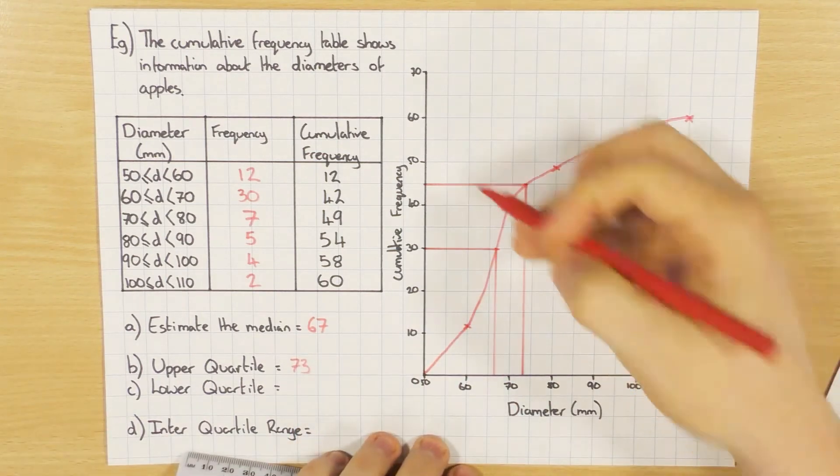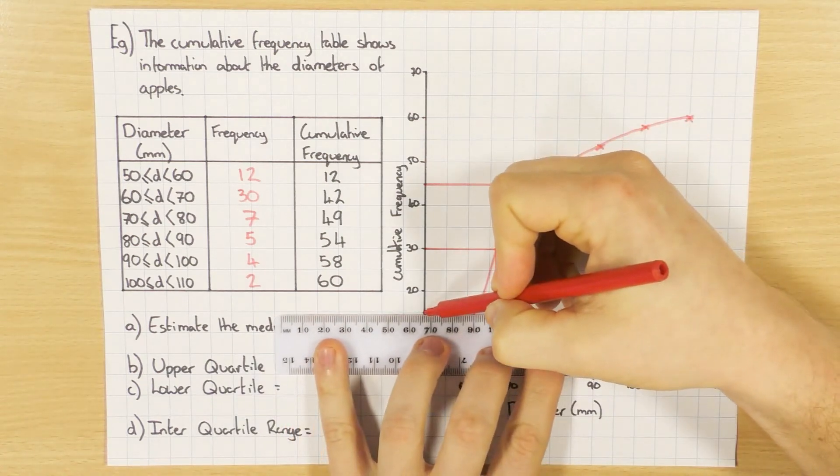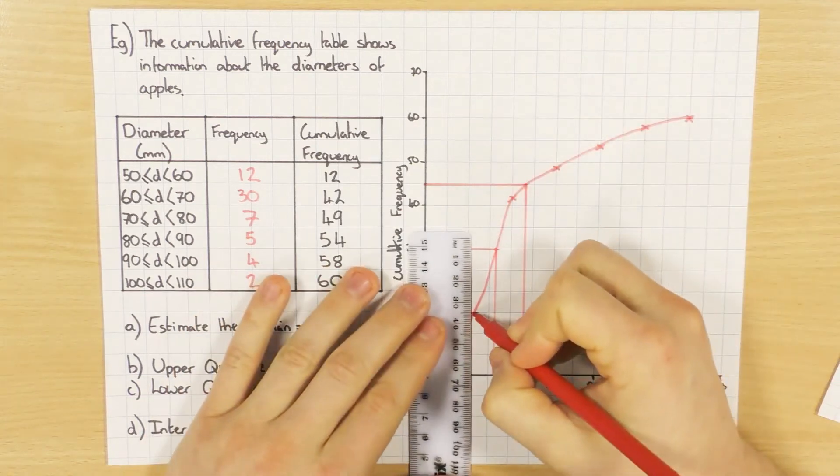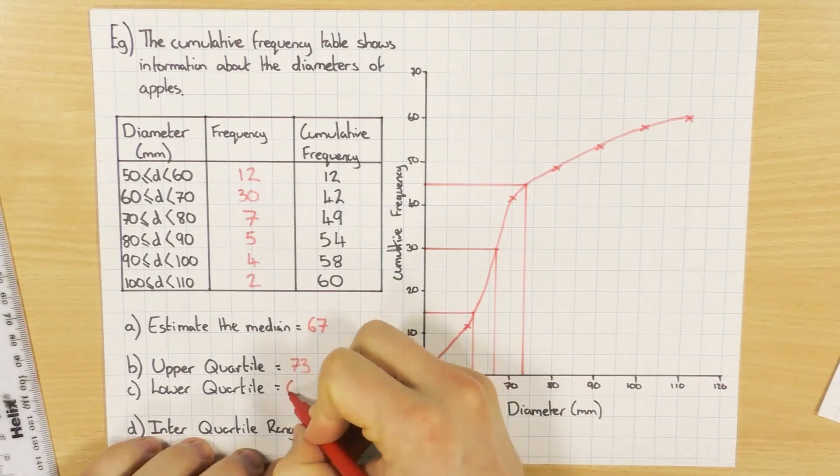And the lower quartile, again, is a quarter, so a quarter of 60. So 60 was the total, so a quarter of that is 15. And that's about 62.